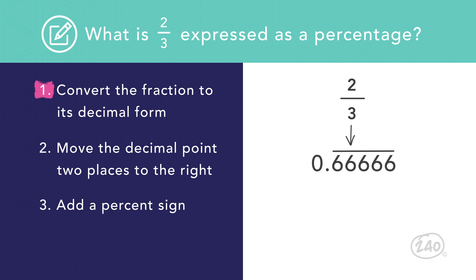Now that we have a decimal, we can convert it to a percentage the same way as before. Move the decimal point twice to the right and round as needed. Now we see that two thirds is approximately equal to 66.67%.